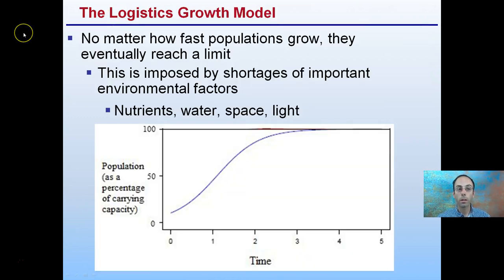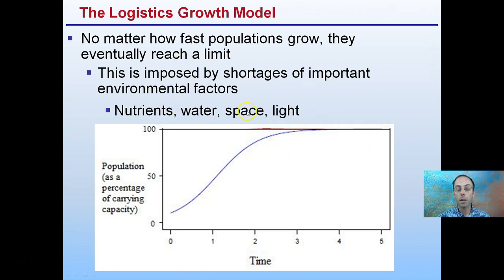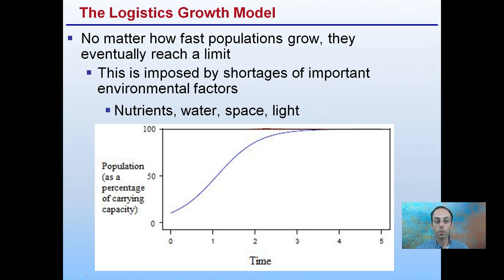The logistic growth model recognizes that no matter how fast populations grow, they eventually reach a limit — and that's evident in the plateauing we see. This is imposed by a shortage of important environmental factors: it could be nutrients, water, space, or light — any combination of these, depending on the organism and geographic region.